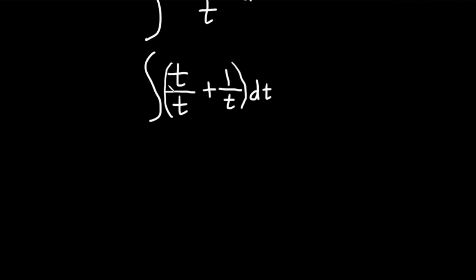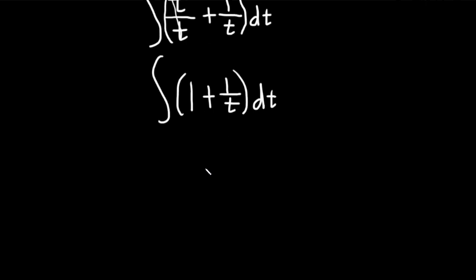We can go further. t over t cancels, so we end up with 1. This is the integral of (1 plus 1 over t) dt. Now we're in a good place and can integrate.